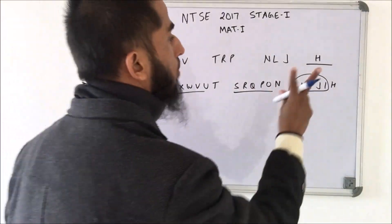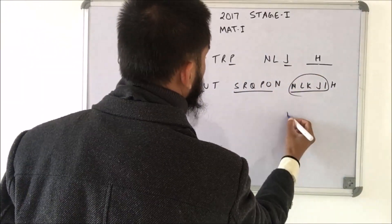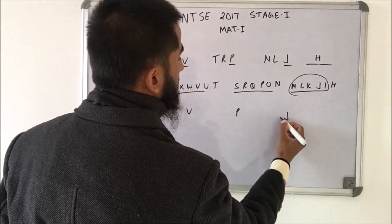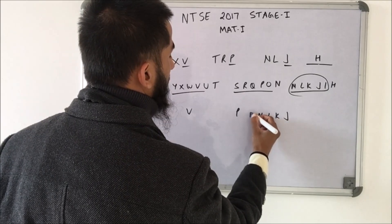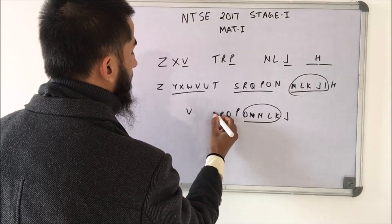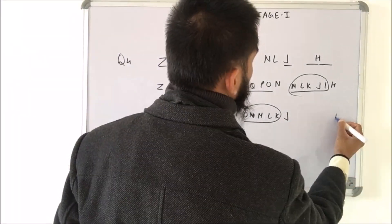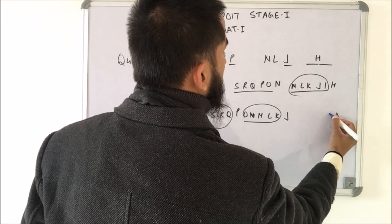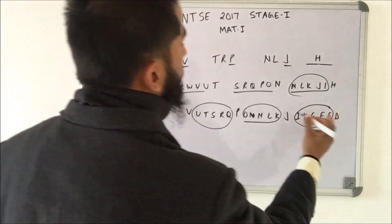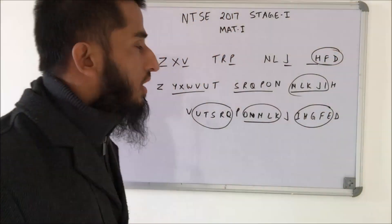From the options we have only two options starting with H. Instead of checking all, let's take the last term and see the pattern: J, P and V. Between J and P: K, L, M, N, O — five terms. Then Q, R, S, T, U — five terms. So we should have D here: E, F, G, H, I. So the last term should be D. From the options, H of D is the only option, so H of D is the correct answer.